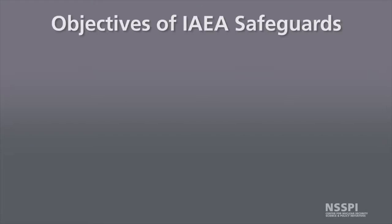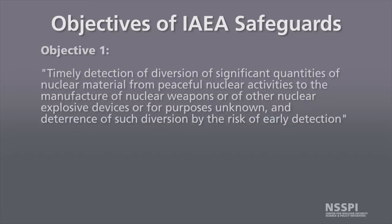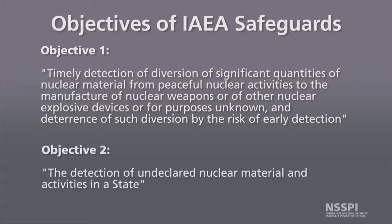The objectives of IAEA safeguards, if we take a closer look: the first objective is timely detection of diversion of significant quantities of nuclear material from peaceful nuclear activities to the manufacture of nuclear weapons or other nuclear explosive devices, or for purposes unknown, and deterrence of such diversion by the risk of early detection. The second objective is the detection of undeclared nuclear material and activities in the state. Those two objectives work together to prevent further proliferation from civilian nuclear programs.